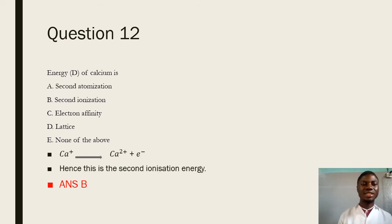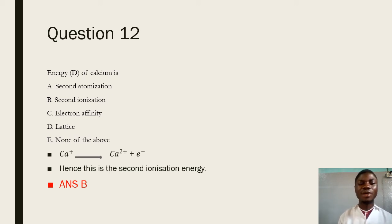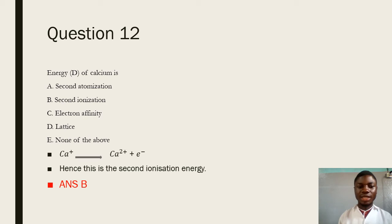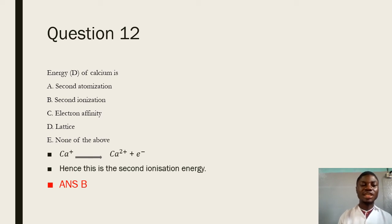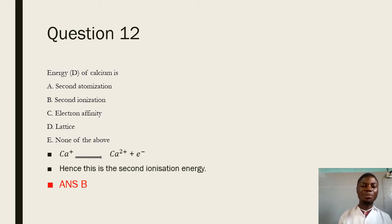Question 12 says: energy D of calcium. We can see a situation whereby the calcium ion is giving up another electron to form Ca²⁺. This energy is known as the second ionization energy, which is the amount of energy absorbed when a unipositive gaseous ion gives up another electron to form one mole of a dipositive gaseous ion. The answer is going to be B.